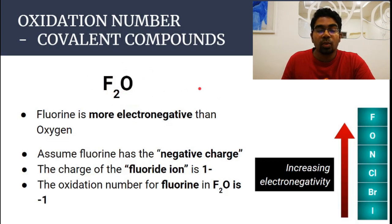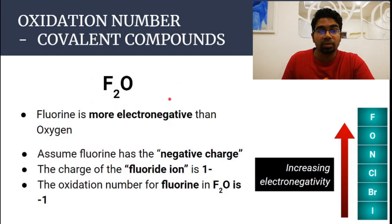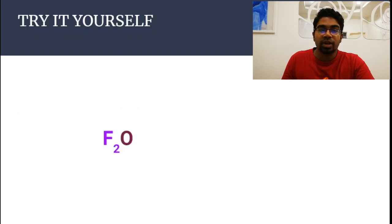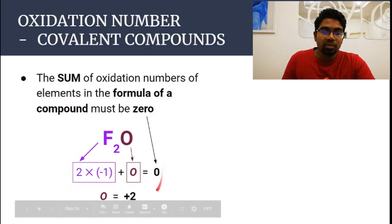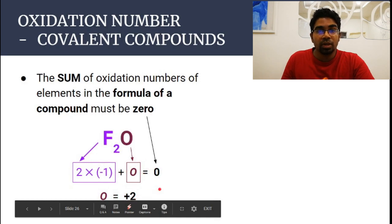So what is the oxidation number of oxygen? We do the calculation: the sum of oxidation numbers of all elements equals zero in a compound, whether ionic or covalent. The answer is: two times minus one plus the oxidation number of oxygen equals zero, so the oxidation number of oxygen is plus two — not minus two.